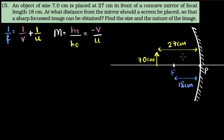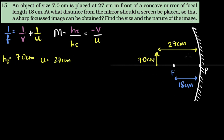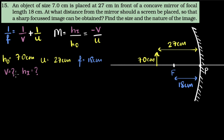Let's see what we know and calculate the image distance. We know the height of the object: 7.0 centimeters. We are given the object distance: 27 centimeters. We also know the focal length: 18 centimeters. What we need to calculate is the image distance, and also the height of the image for size and nature. I have the mirror formula, I know f, I know u, so I can calculate v.